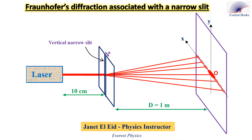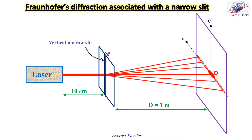This diagram represents the setup for diffraction associated with a narrow slit. If the distance D between the slit and the viewing screen is very long, then the rays reaching a point on the screen are approximately parallel. The pattern on the screen is called Fraunhofer's diffraction pattern. This is the laser source, this is the narrow slit of width A, and this is the viewing screen. The laser beam falls on the narrow slit and undergoes diffraction.